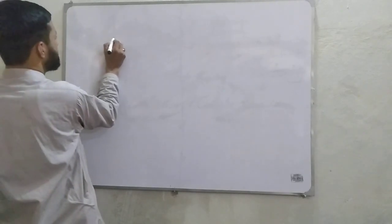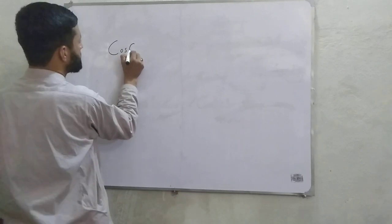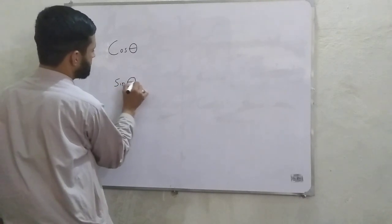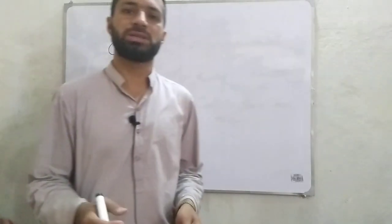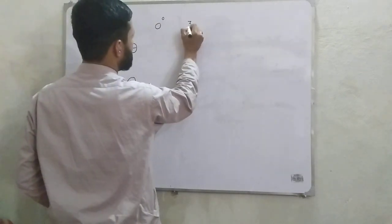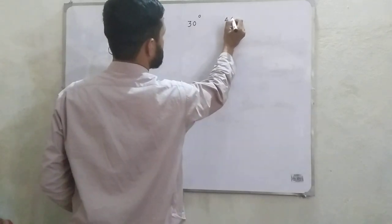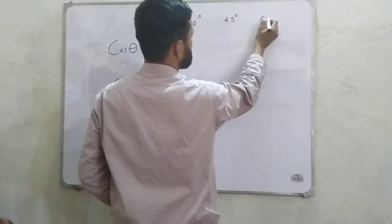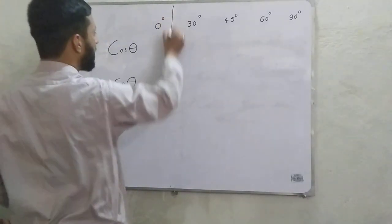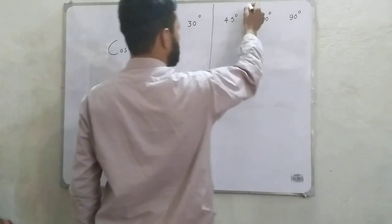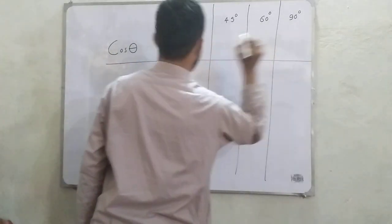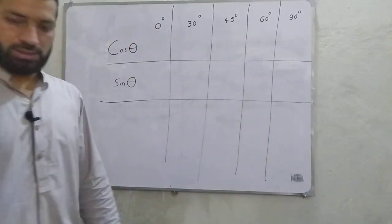Here I am writing cos theta and sine theta. We have the famous angles that commonly come in questions: zero degrees, 30 degrees, 45 degrees, 60 degrees, and finally 90 degrees. In today's lecture I will discuss how you can calculate these without a calculator.